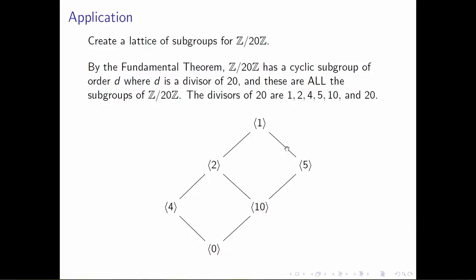The only thing above both the group generated by 2 and the group generated by 5 is the whole group. So this is what I call the lattice of subgroups for ℤ mod 20ℤ. All of my different subgroups are here, and the ways they interact are shown: since the group generated by 10 is a subgroup of both the group generated by 2 and the group generated by 5, I've drawn it lower in the picture, contained in each of these, and the only thing contained in each of these is the trivial subgroup at the bottom.